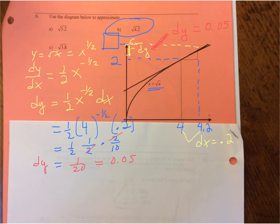The value I'm looking for is the estimate of what the square root of 4.2 would be. If the square root of 4 is 2, and I have a differential of 0.05, then this estimate of the square root of 4.2 has to be those two added together. Our estimate is 2.05.